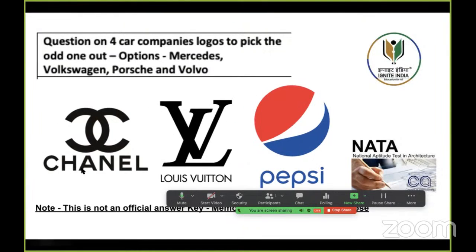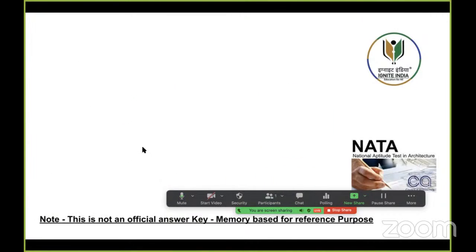This logo is associated with Chanel, this is Louis Vuitton, and this is the Pepsi logo. Now if I ask you to identify the odd one out, the Pepsi logo would be the odd one among these, since the others are luxury fashion brands. In the actual exam the brand name probably won't be shown, unlike this time.